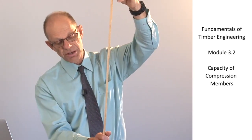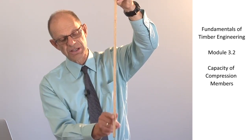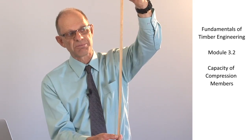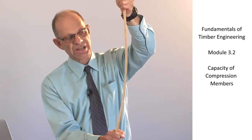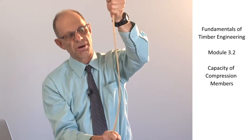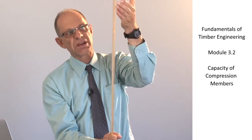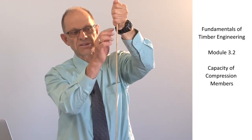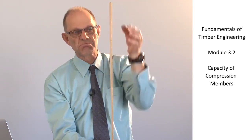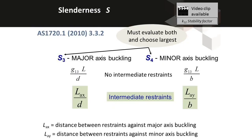If there are no lateral restraints, a lot depends on how rigid the connections at the end are. If the connections are pinned, that gives one buckled shape. However, if the member is rigidly clamped at each end, we can induce some reverse curvature near the top of the member because of that rigid clamping. The G13 factor recognises that the rigidity of the end connection may affect the buckling strength, and it is incorporated into the evaluation of the slenderness where there is no intermediate support.